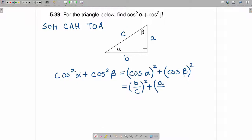So this will be A over C squared. When you square those out, you get B squared over C squared plus A squared over C squared. Those have common denominators, so we have B squared plus A squared divided by C squared.